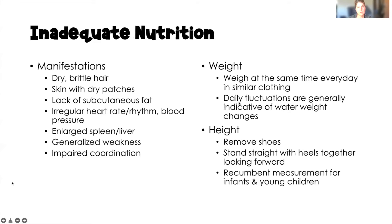There are many clinical manifestations of inadequate nutrition, such as dry, brittle hair; dry skin, especially with dry patches; and lack of subcutaneous fat. We might also see vital sign changes, such as an irregular heart rate and rhythm or a drop in blood pressure, especially with fluid volume deficit or dehydration. An enlarged spleen or liver, generalized weakness from iron deficiency anemia or another type of anemia, and impaired coordination due to neurological involvement — sometimes seen when a client isn't getting enough B vitamins.